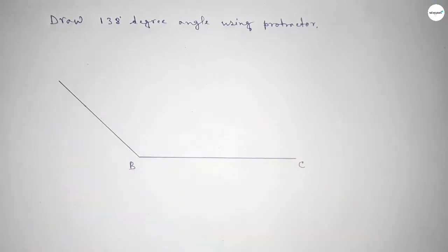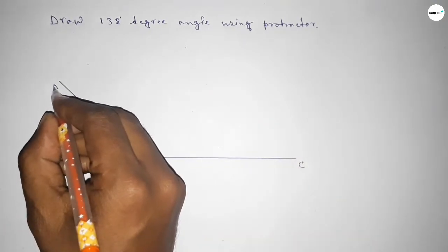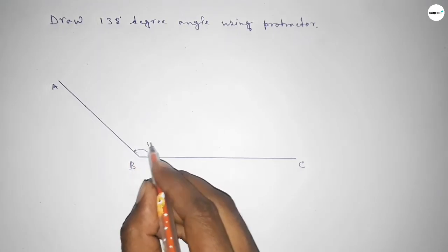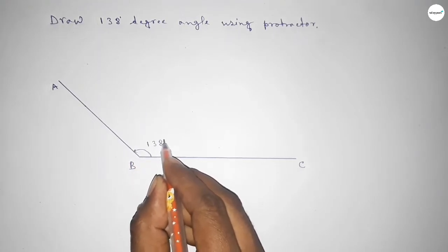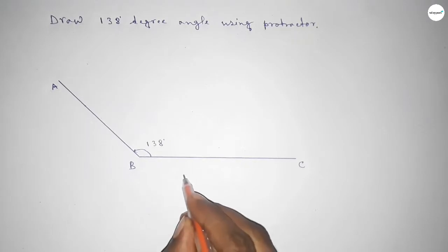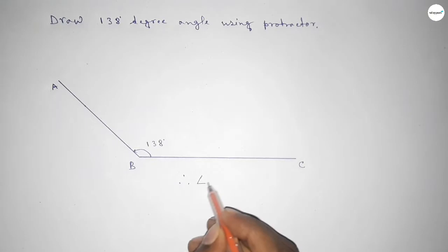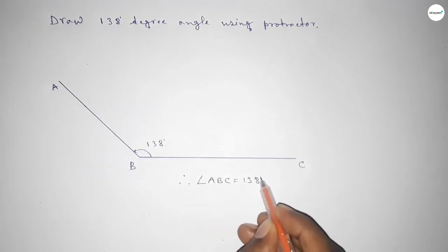And taking here point A, so angle ABC up to this is 138 degrees. Therefore, angle ABC equals 138 degree angle. That's all, thanks for watching.